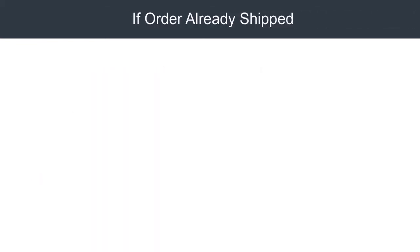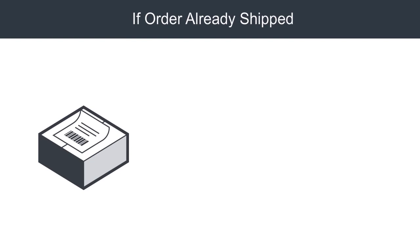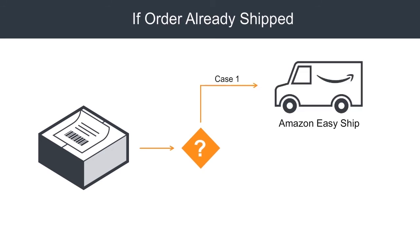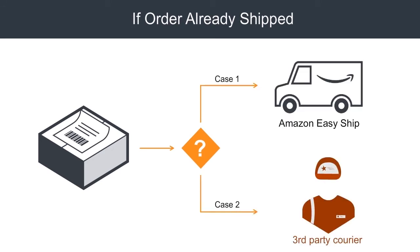If the order has already been shipped, a different set of actions need to be taken depending on whether the order has been shipped by Amazon Easy Ship or a third-party courier, which is a self-ship order.